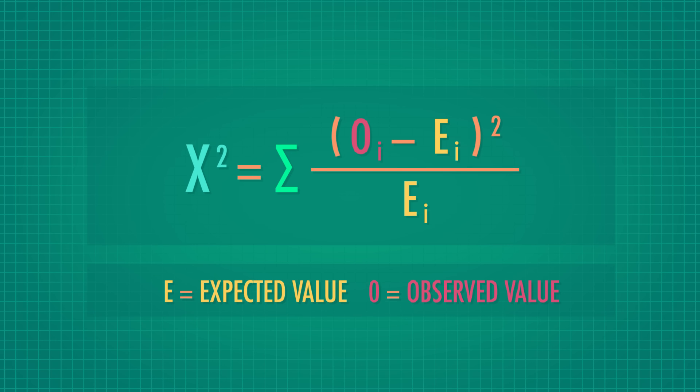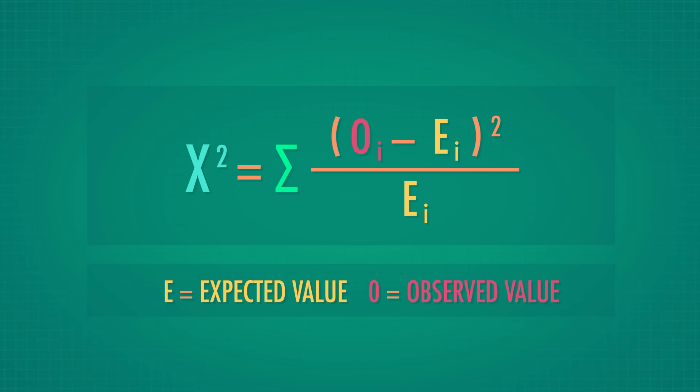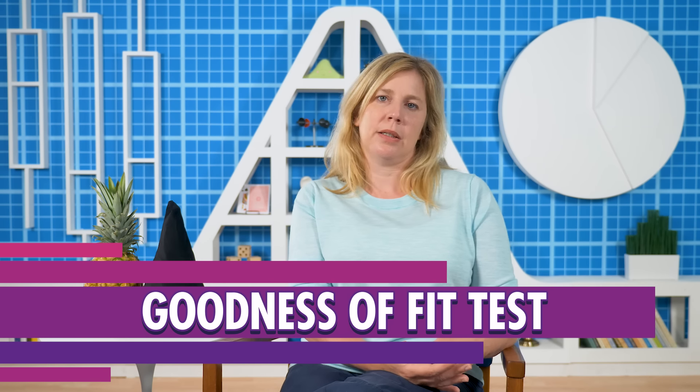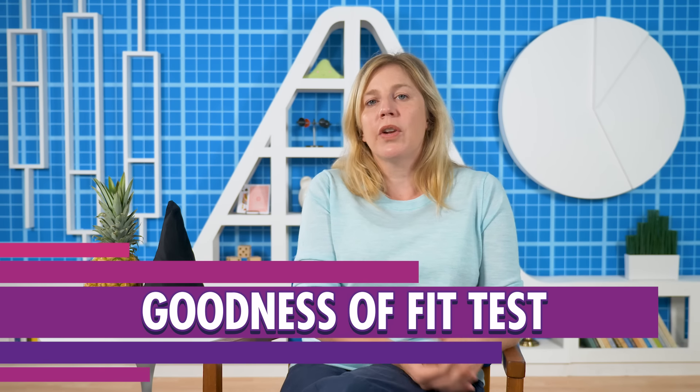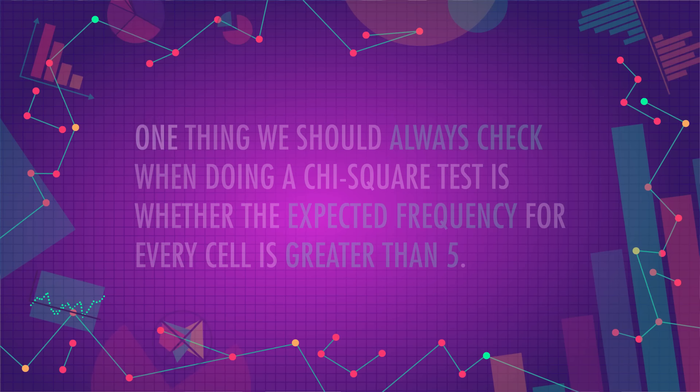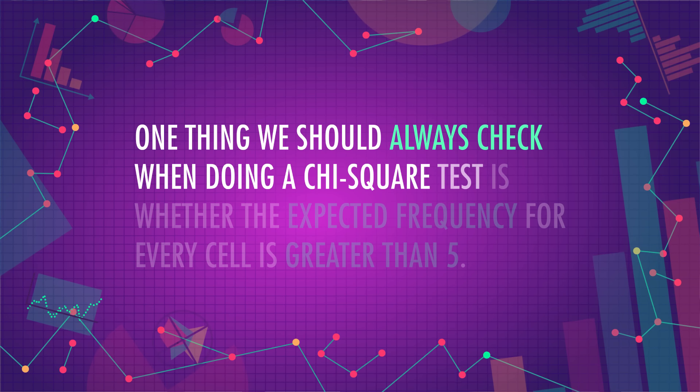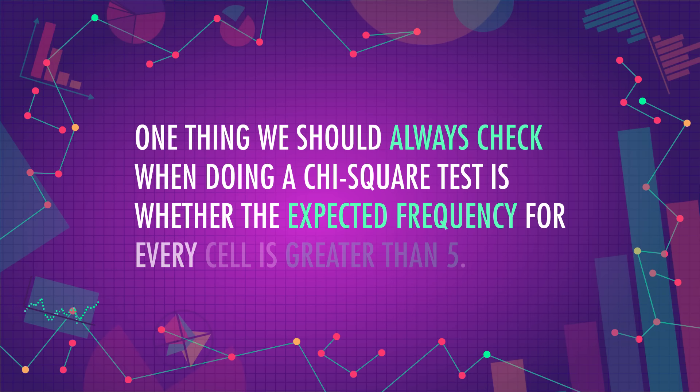All chi-square tests follow the same formula we just worked through, and there are three main ways we use them. The one we just did is called a chi-square goodness-of-fit test, because we tested how well certain proportions fit our sample. One way to know you're looking at a goodness-of-fit test is if it only has one row — we can have many categories, but we're only looking at one variable, like character class. One thing we should always check is whether the expected frequency for every cell is greater than 5; if it's lower, the results can be off. This cutoff of 5 is arbitrary, but widely accepted.